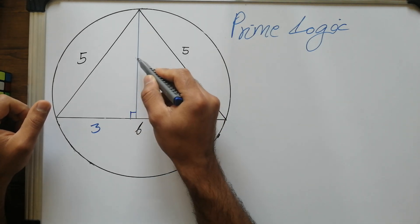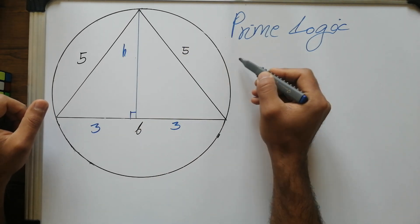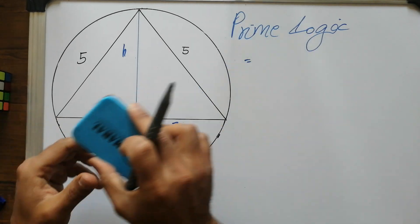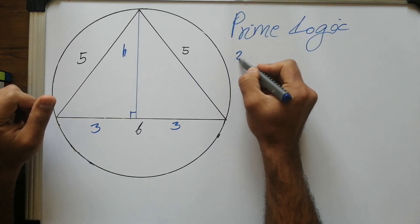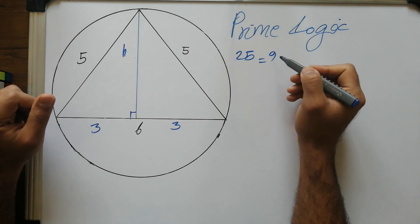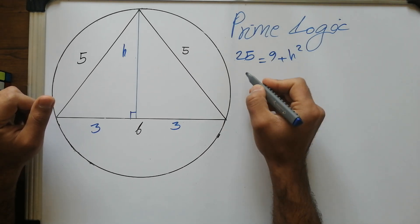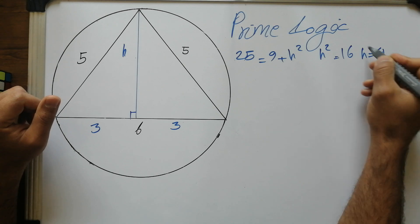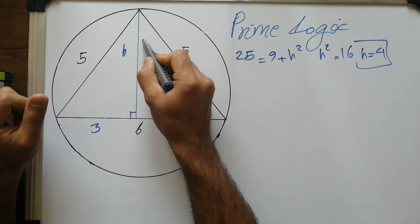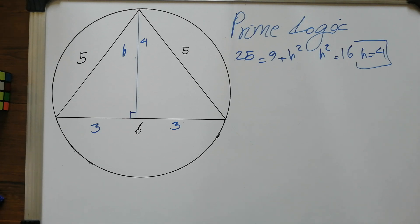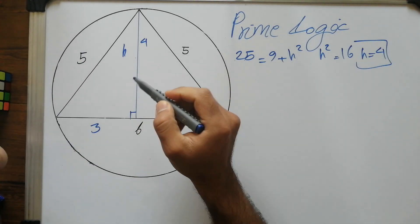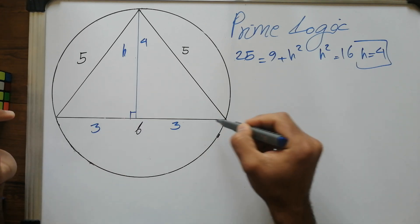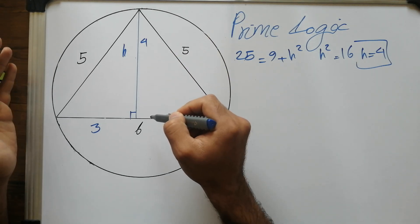So h, the height, satisfies: 5² = 3² + h², which gives us 25 = 9 + h², so h² = 16, and h = 4. This is a classic 3-4-5 right triangle.